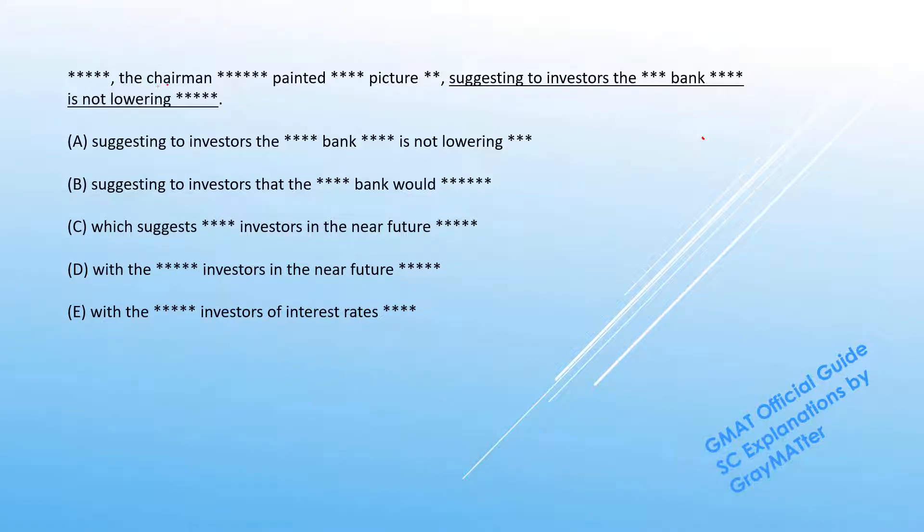Now in this question the main clause is in the non-underlined portion. We can see that the chairman, the subject, painted a picture of the economy. The clause ends with a comma followed by "suggesting to investors the bank." This construction is the present participle modifier at the end of the clause.